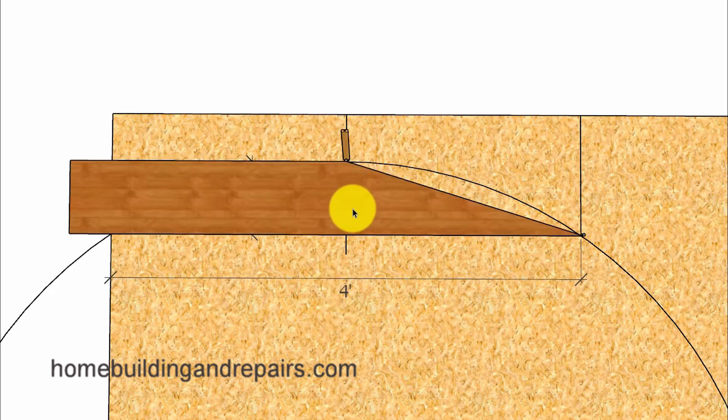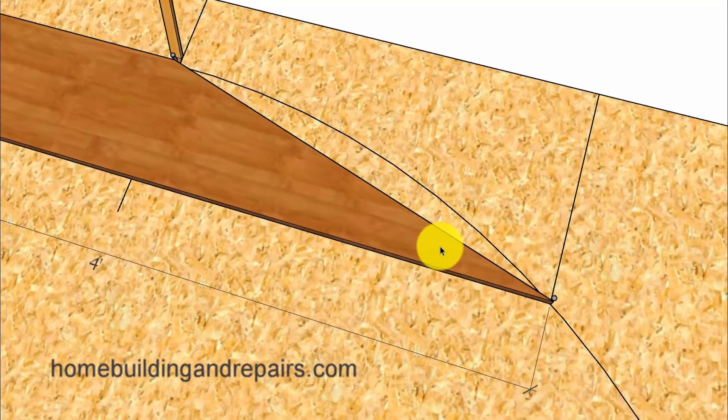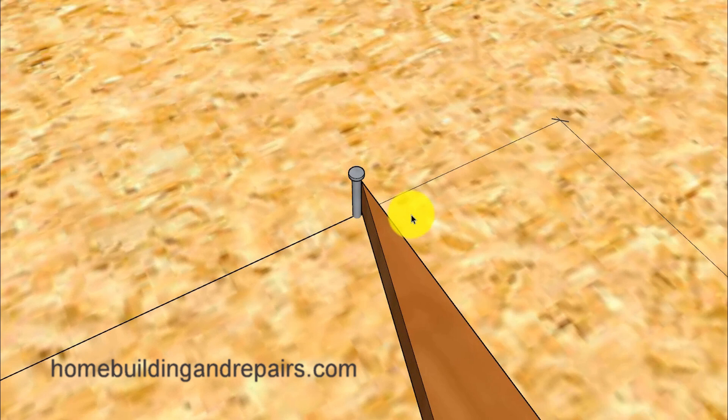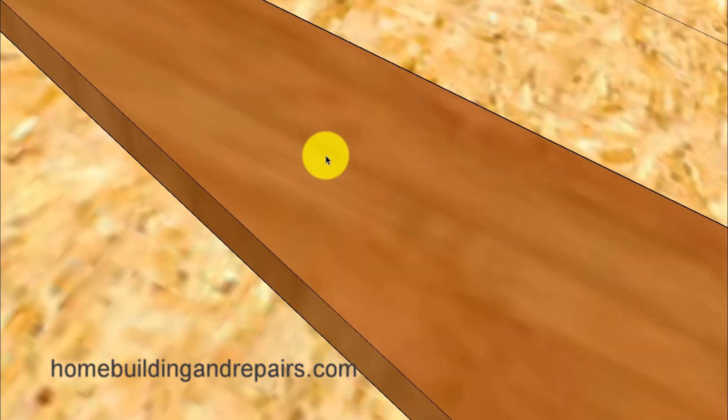For those of you who need a little more help figuring out how to do the other side, just simply flip the board over and reposition it and then repeat the steps that we just did while sliding it along the nails or blocks and keeping the guide board tight against those.